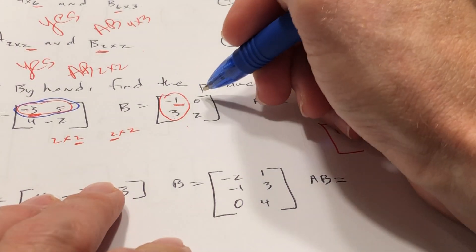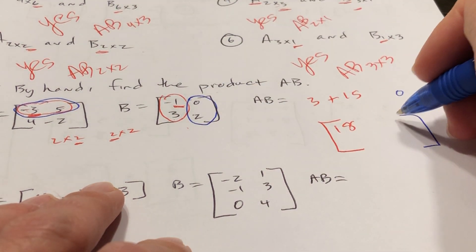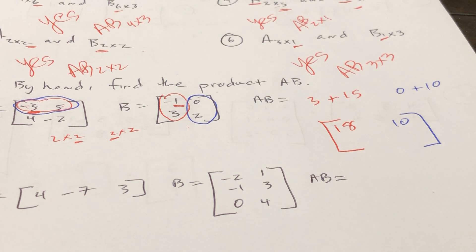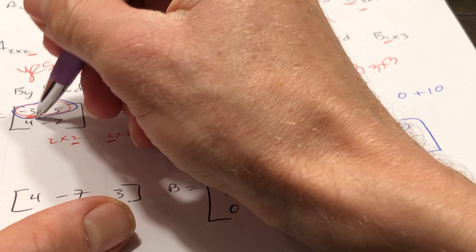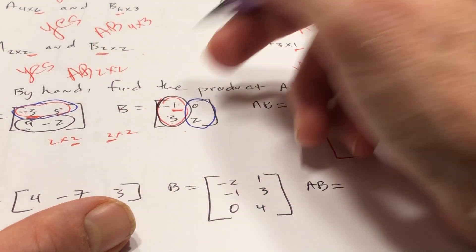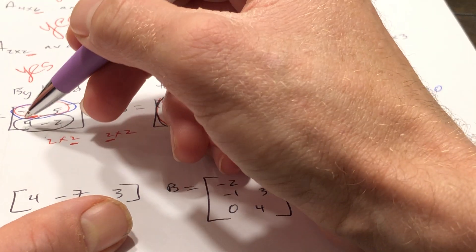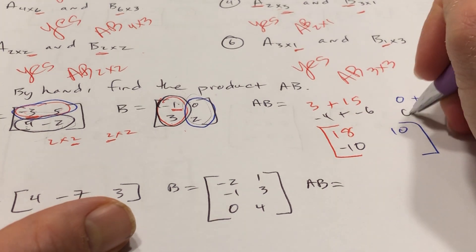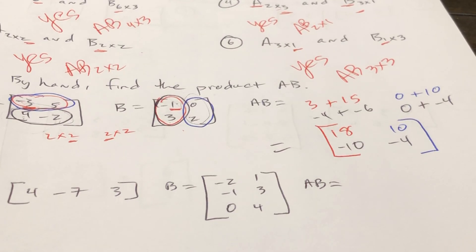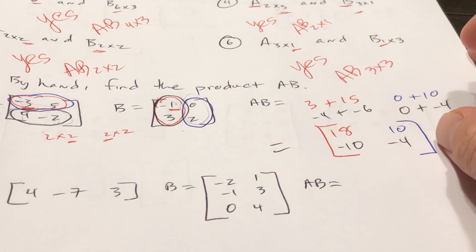So, find the product AB. A is 2×2 and B is 2×2, so yes I can multiply them — my answer will be 2×2. First row by first column: negative 3 times negative 1 is 3, plus 5 times 3 is 15, so 18. First row by second column: negative 3 times 0 is 0, plus 5 times 2 is 10. Second row by first column: 4 times negative 1 plus negative 2 times 3 is negative 10. Second row by second column: 4 times 0 plus negative 2 times 2 is negative 4.